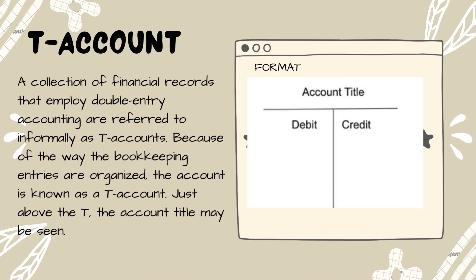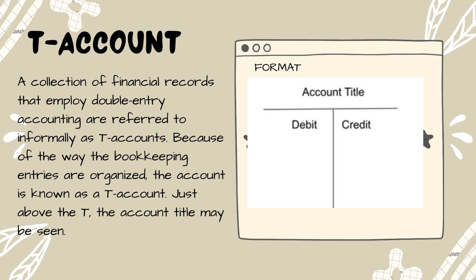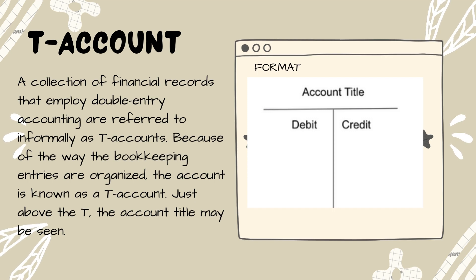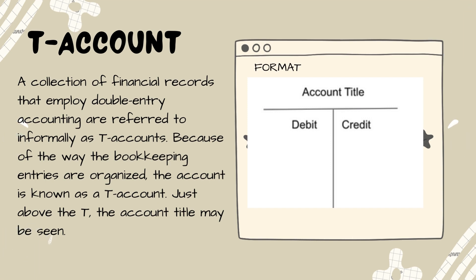T-accounts: a collection of financial records that employ double-entry accounting, referred to informally as T-accounts. Because of the way the bookkeeping entries are organized, the account is known as a T-account. Just above the T, the account title may be seen. T-accounts separate the entries in each transaction using a T-shape, where the account title is above, debits on the right, and credits on the left.